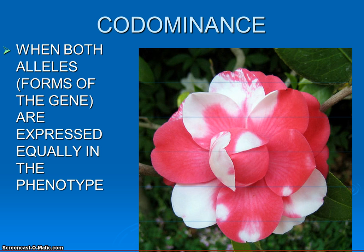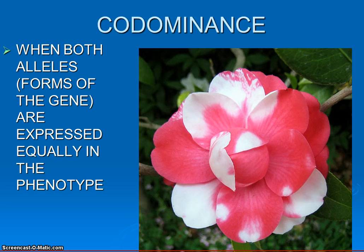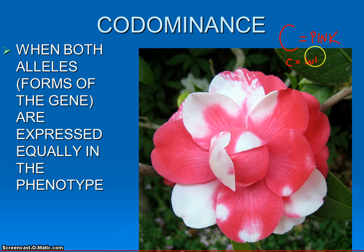Let's start with an easy example — this flower. Obviously as you can see in the phenotype, this has some white pigmentation and it has some pink pigmentation. Now if we think about this, it would make sense, just like we learned from Gregor, that there must be a gene that controls flower color. Let's assume it has one simple gene that controls color. Let's say a big C codes for pink, and a little c codes for white.